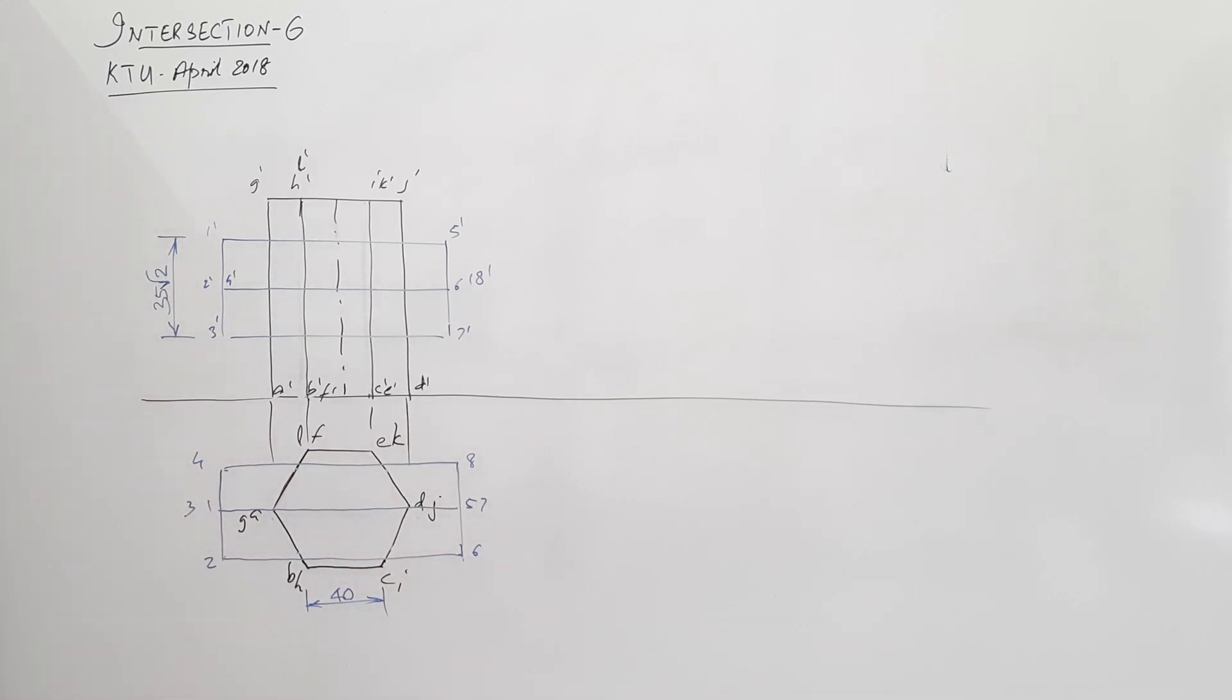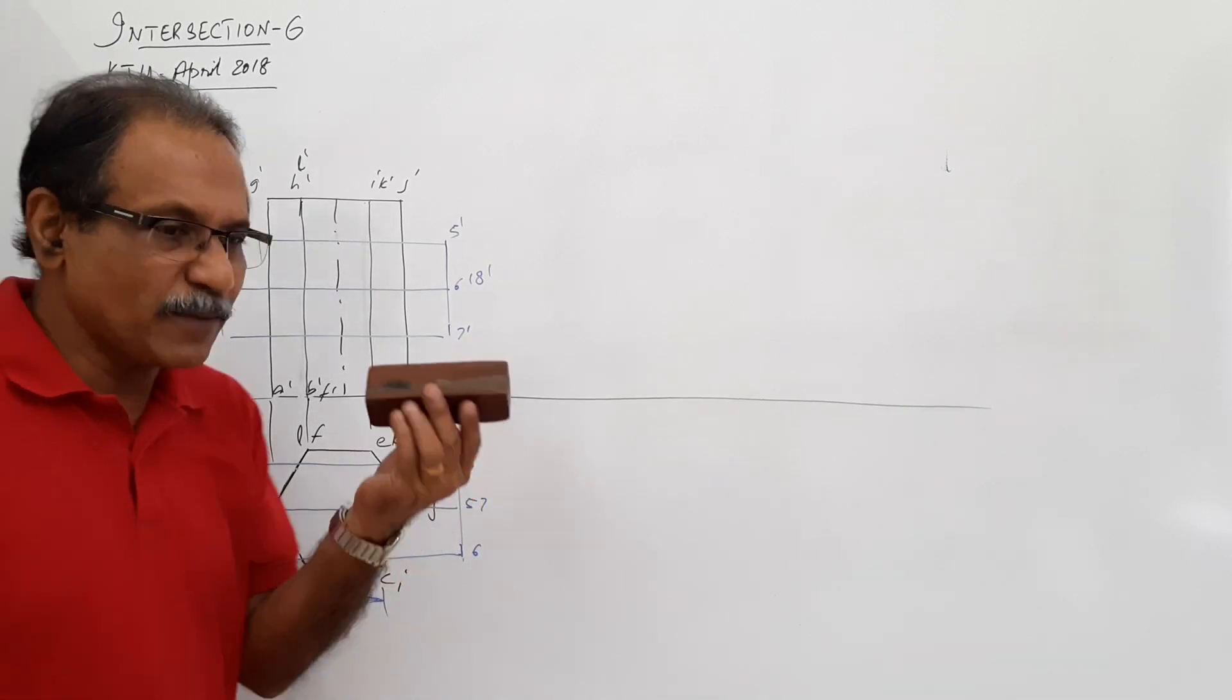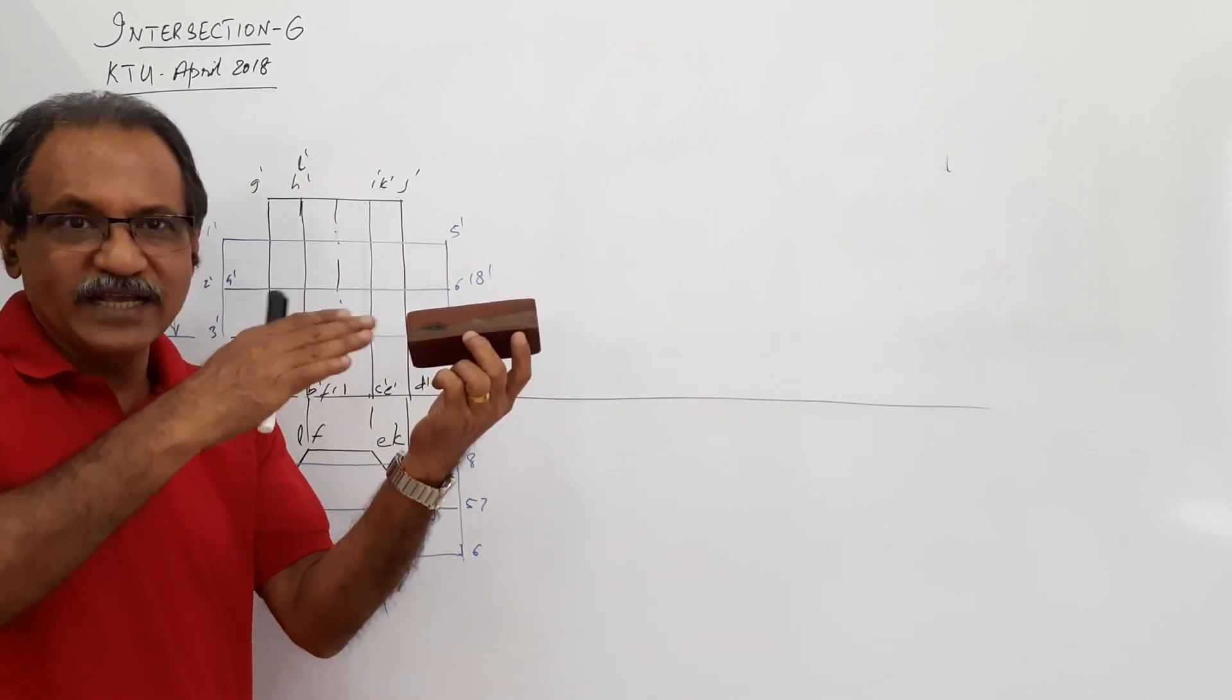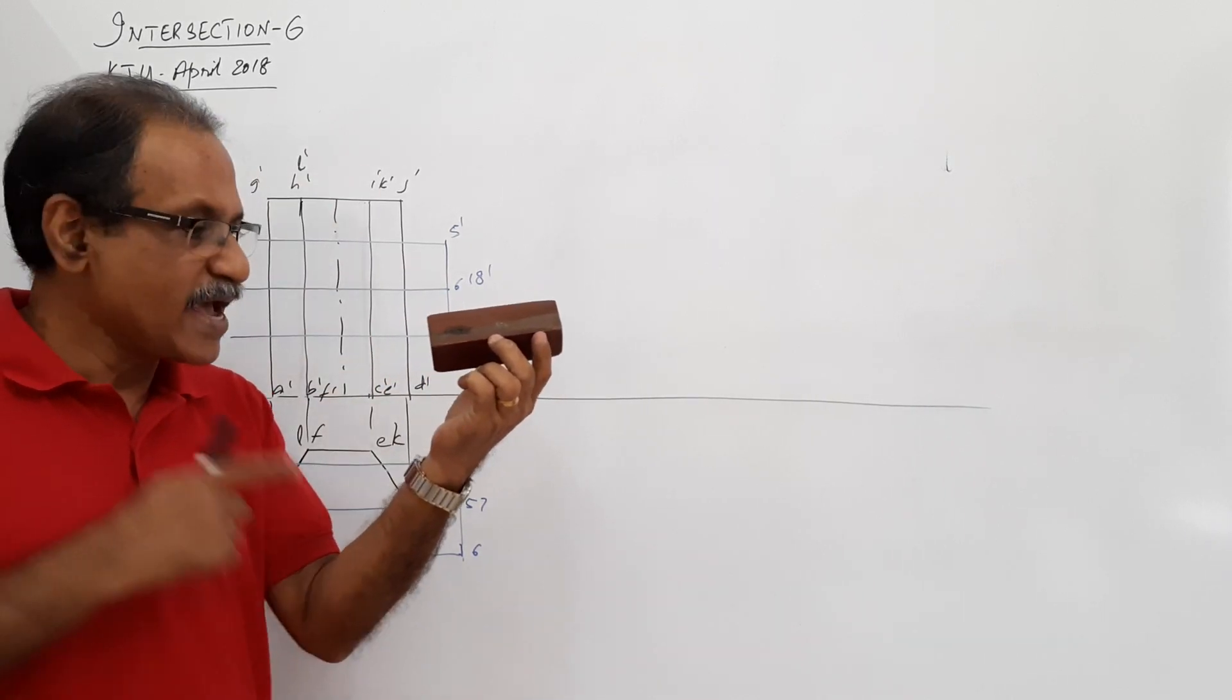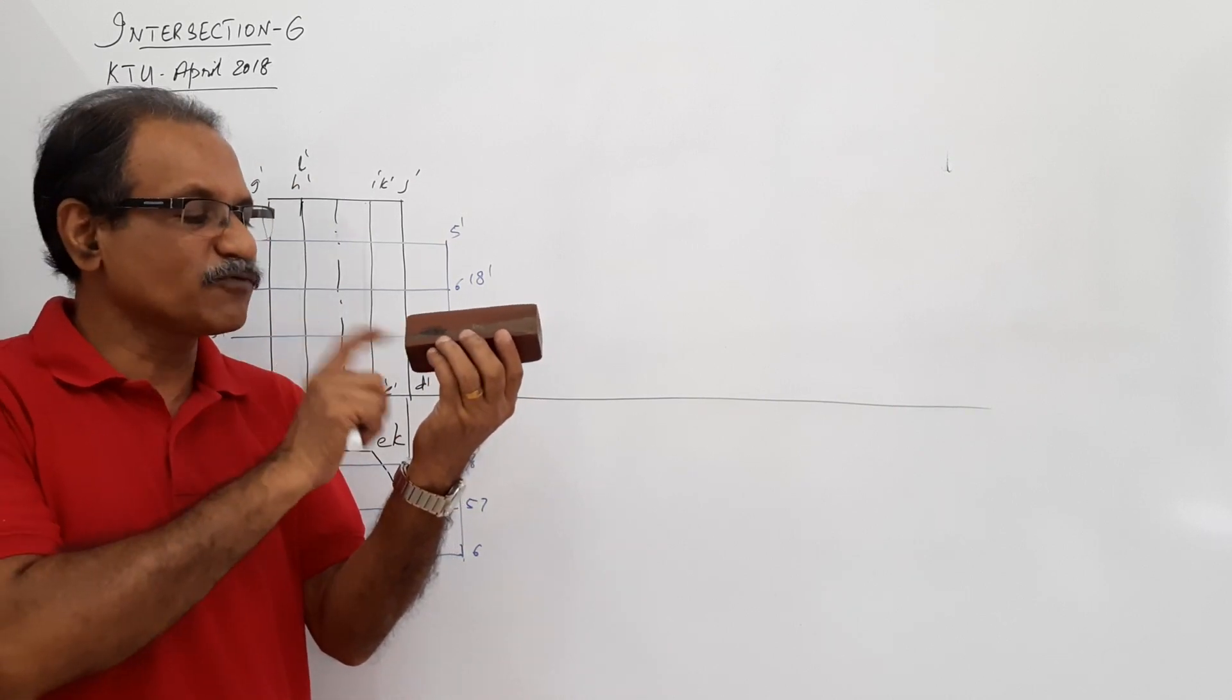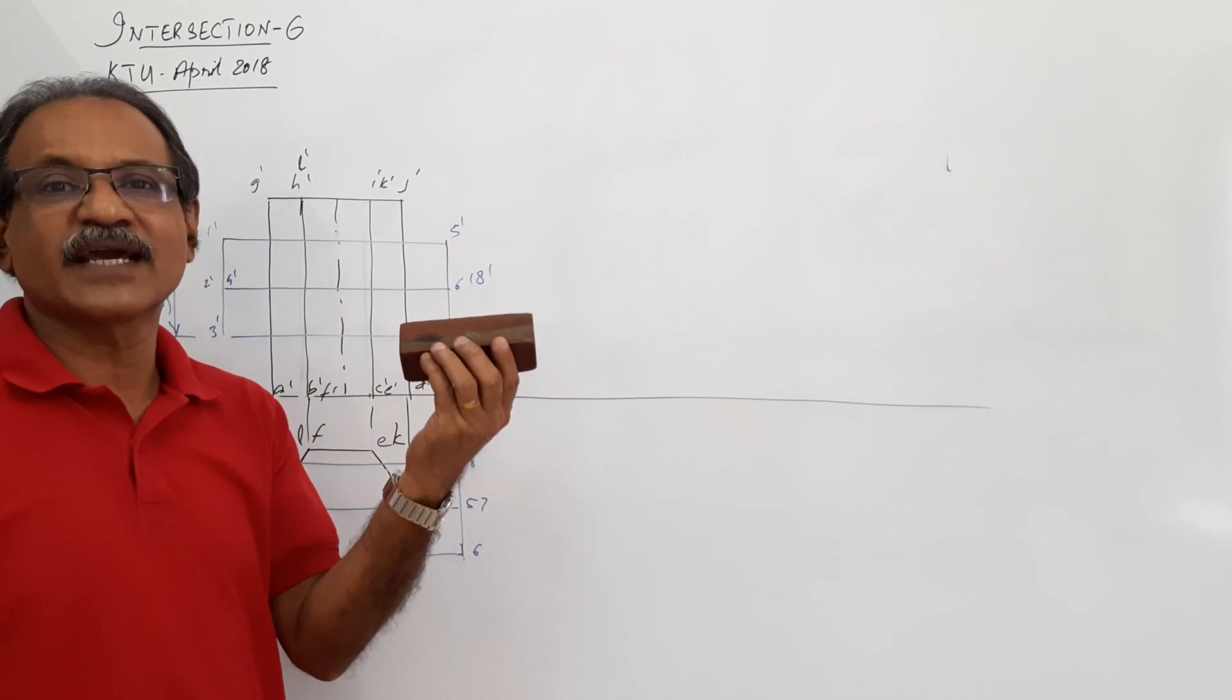Now this is penetrated by a square prism. How is it? All lateral faces equally inclined to HP and the axis parallel to both planes in such a way that the axis of this prism cuts the axis of the vertical hexagonal prism. The axes are intersecting.